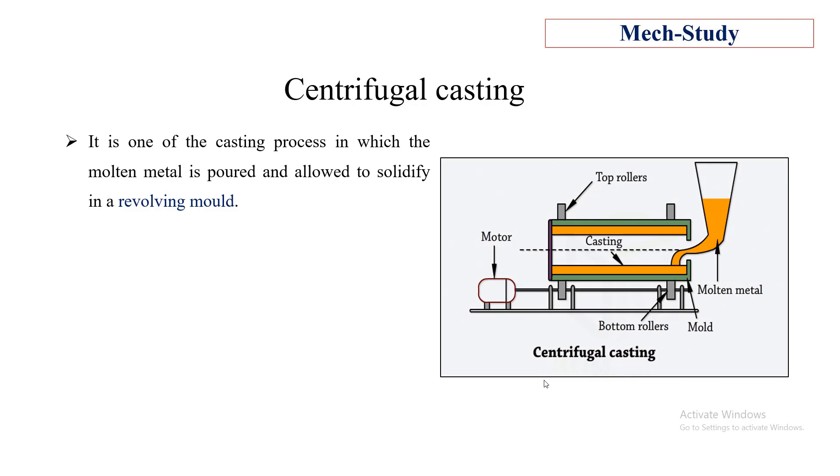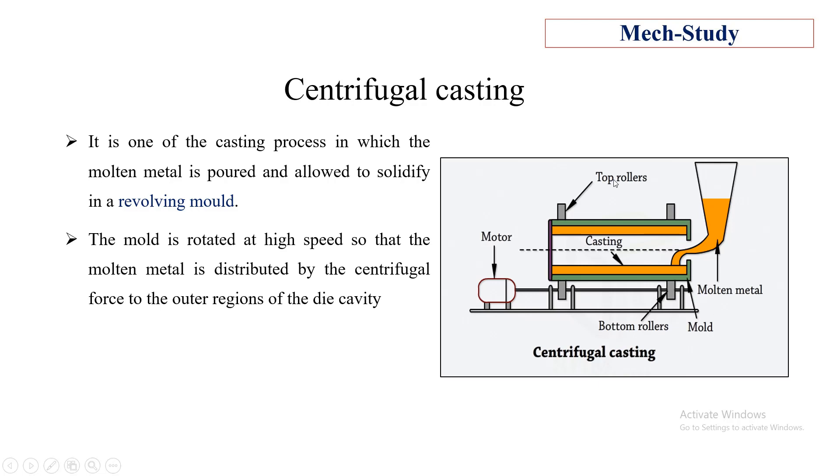Here it is a casting mold which is rotated by means of rollers. The mold is rotated at a high speed so that molten metal is distributed by centrifugal force to the outer region of the die cavity.